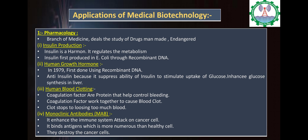Insulin is a hormone that regulates the metabolism of carbohydrates. E. coli is a bacterium used in the body for digestion-related processes. Number 2: Human Growth Hormone — in 1979, recombinant DNA technology was used to produce the first human growth hormone. It is anti-insulin because insulin's ability is reduced by glucose. Glucose is produced by the liver and is used to enhance the blood.